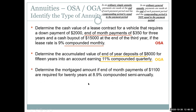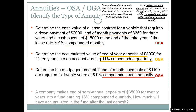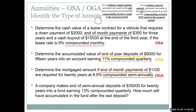Example 7: end-of-month payments of $1,100 for 20 years at 8.9% compounded semi-annually. End means ordinary; monthly payments but semi-annual compounding don't match — ordinary general annuity. Example 8: end-of-semi-annual deposits of $35,000 for 20 years into a fund earning 13% compounded quarterly. End means ordinary; semi-annual deposits every six months, quarterly compounding every three months — they don't match, so this is also an ordinary general annuity.